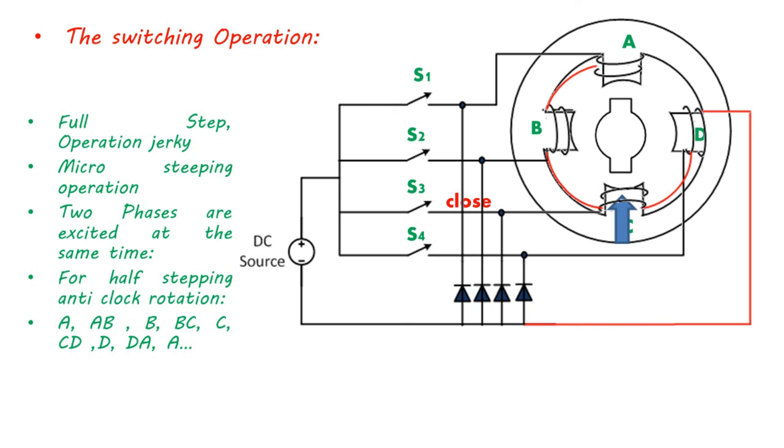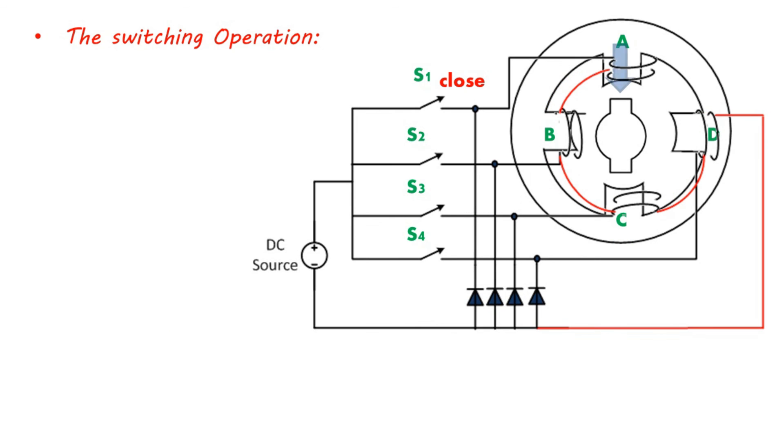For half-stepping clockwise rotation, sequence should be reversed. Now sequence of switching is phase A, then phases A and D, then phase D, then phases D and C, then phase C, then phases C and B, then phase B, then phases B and A, then phase A.